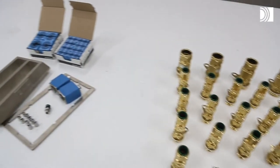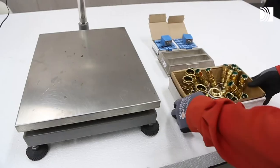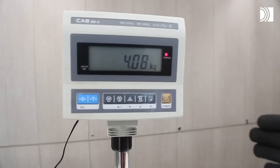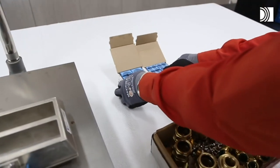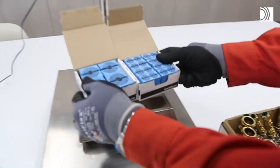To check the difference, we did a pre-fight weigh-in. Cable glands: 4.08 kilos. Roxtec: 1.98 kilos.